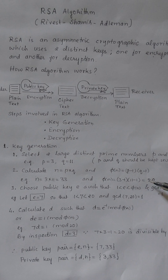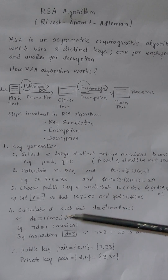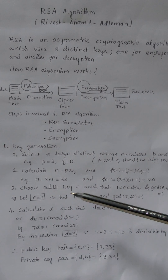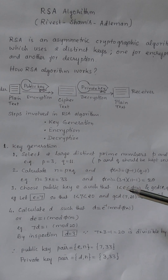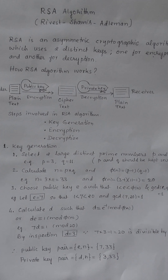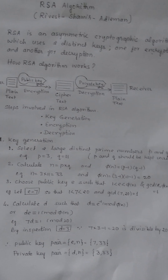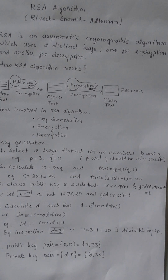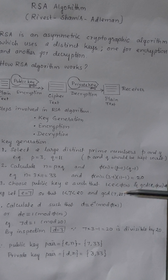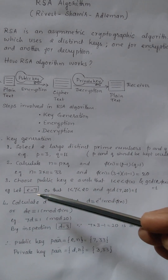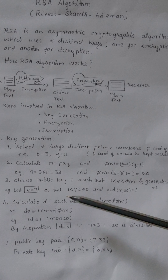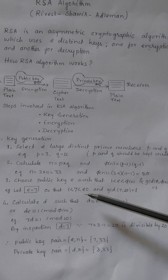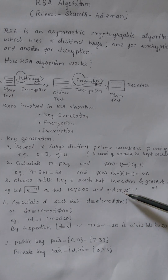Now we choose the public key E such that 1 < E < phi(n), and E should be relatively prime with phi(n), meaning GCD(E, phi(n)) = 1. Let us take E as 7 — it satisfies both conditions: 1 < 7 < 20, and GCD(7, 20) = 1.